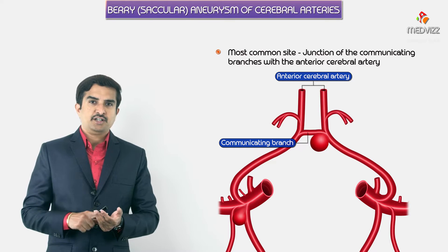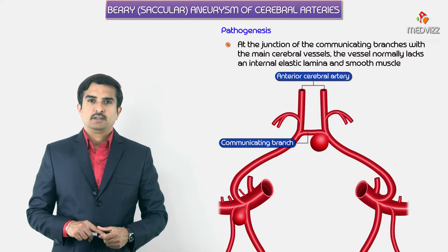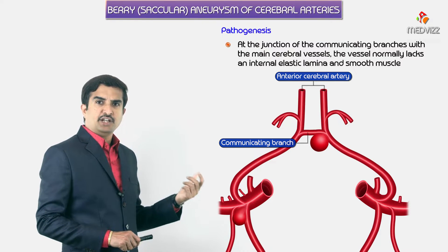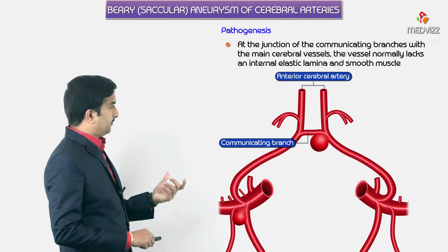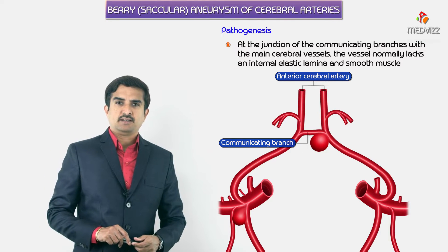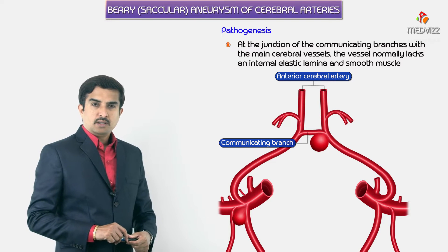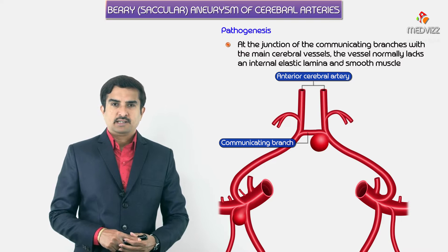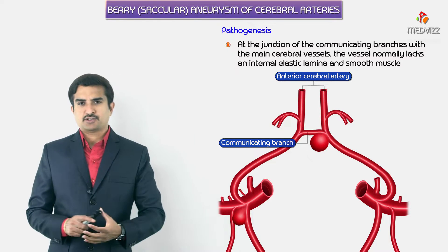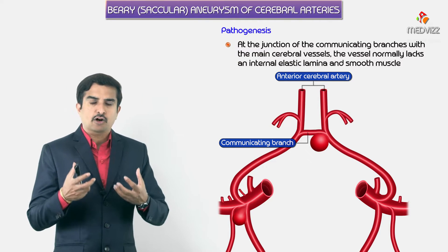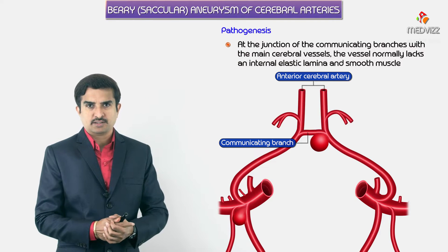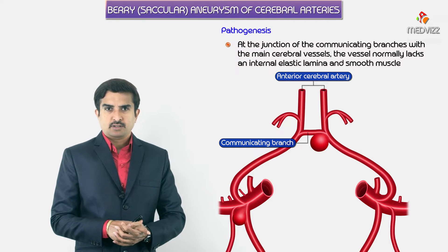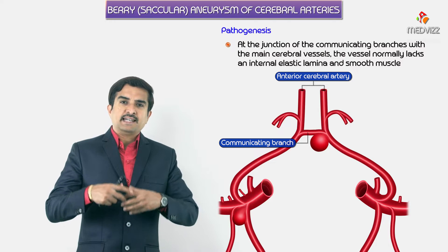Why are berry aneurysms seen specifically at the anterior communicating artery and not at the anterior cerebral artery itself? The communicating branches of the cerebral arteries — particularly those of the circle of Willis — lack the internal elastic lamina and smooth muscle. Because these communicating branches lack smooth muscle and elastic lamina, the integrity of the vessel wall is severely compromised, especially in the anterior communicating artery joining the two anterior cerebral arteries.